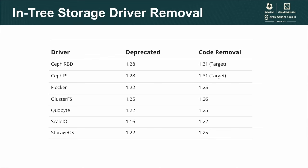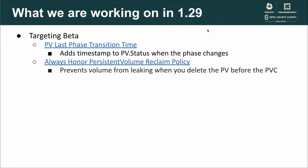Now I will hand it over to Michelle to talk about what we are working on in the 1.29 release. Thank you, Xin. So for the upcoming 1.29 release, we are targeting a few features to be promoted to beta. First is the PV last phase transition time, which Xin talked about. Another feature we are going to promote is the always honor PVC claim policy feature. This addresses a long-standing issue where if you deleted the PVC object before the PV object, it could cause the volume to be leaked even though it had the delete reclaim policy. So now with this feature, we're addressing that issue and the order of deletion between the PV and PVC objects won't matter.